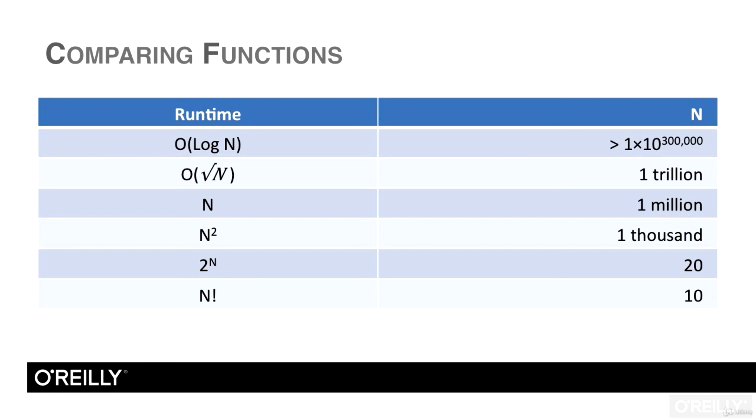Ideally, you can find an algorithm that runs in order log n time, or at least no worse than order n squared time. But if you need to use 2 to the n or n factorial algorithms, your problem size better be really small, or you could be in trouble.